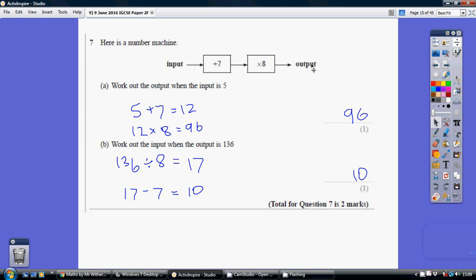So we take our 136 which is our output, we divide it by 8 to get 17, and then we take away 7 from this to get our 10.